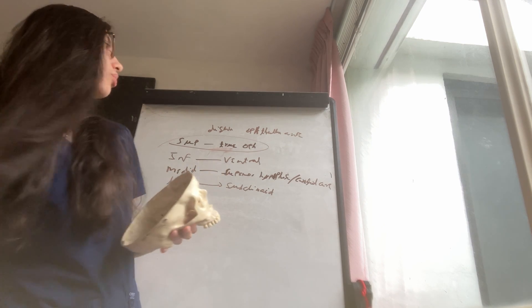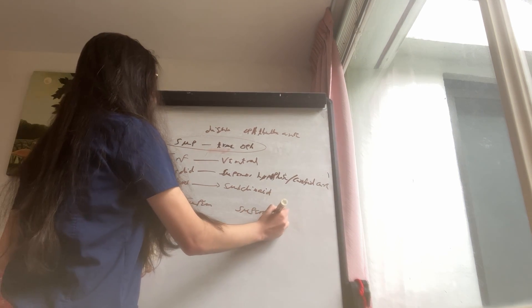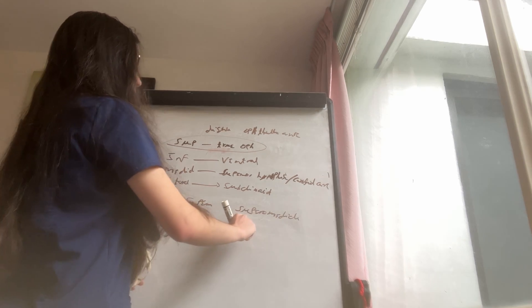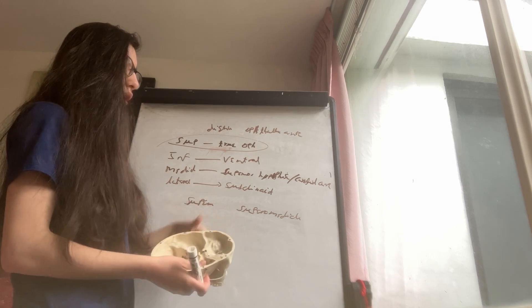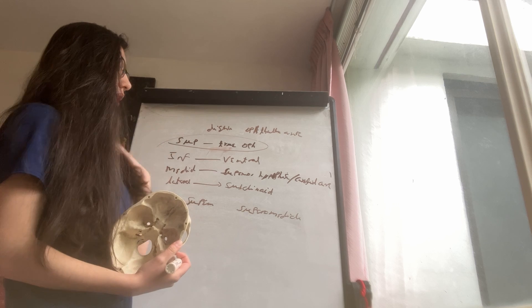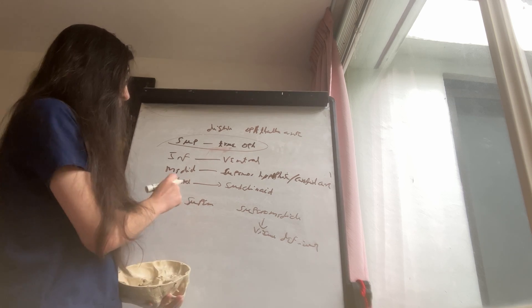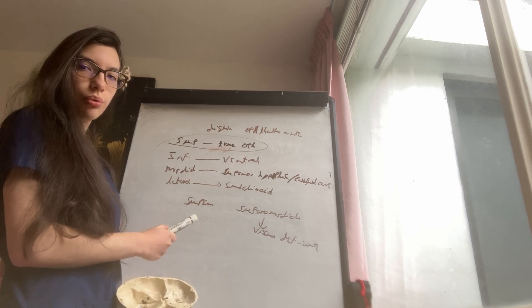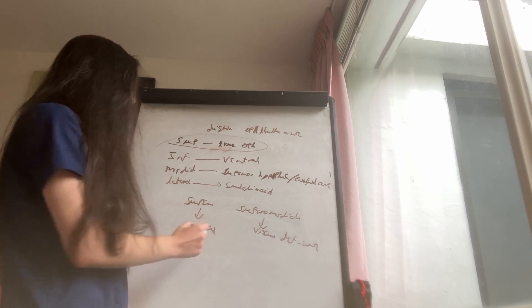There can be superior or superomedial projections. Superomedial projections are more common, and because they compress the optic nerve or optic chiasm, they present with visual deficit. Superior projections, in contrast, are usually lateral to the optic nerve and therefore do not compress it, resulting in no or minimal visual deficit.